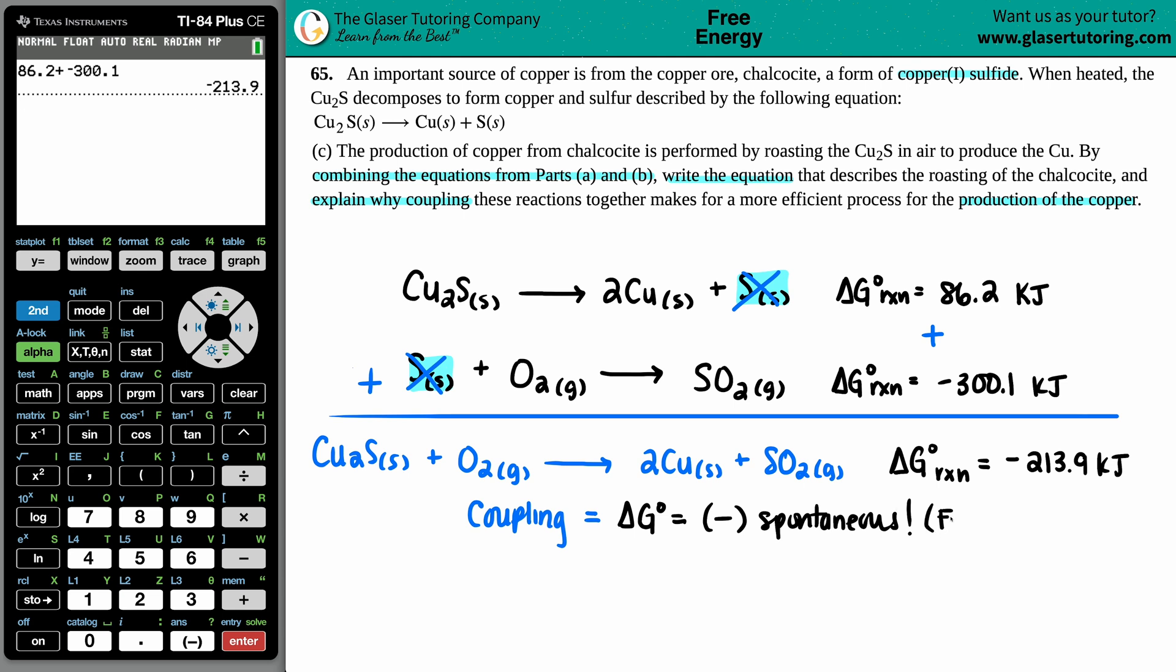Now if I try to produce the copper—because that's what it wants, it wants to produce the copper—I'm looking at the first equation. If I'm trying to produce the copper without coupling these, without coupling, what is that delta G? Well, now the delta G is a positive number—specifically positive 86.2, but it's positive nonetheless. A positive delta G is non-spontaneous.